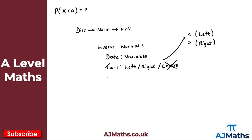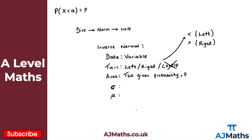It will also ask for the area, and the area is the given probability p. Then finally we need sigma and mu, and these are just dependent on the question — you need to use those from the given values in your question.